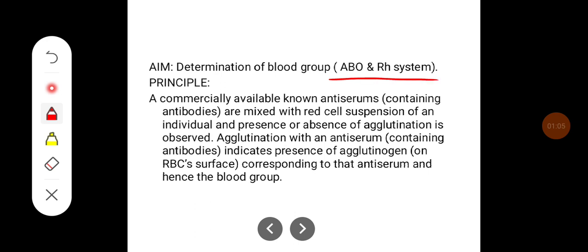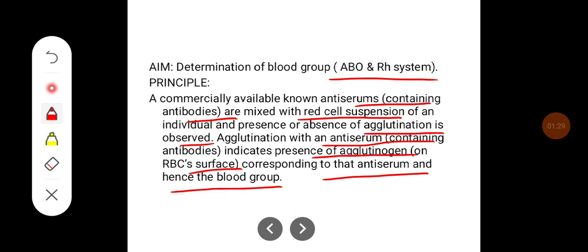The principle here is that commercially available known antiserums containing antibodies are mixed with a red cell suspension of an individual, and presence or absence of agglutination is observed. Agglutination with an antiserum containing antibodies indicates the presence of agglutinogen on the RBC surface corresponding to that antiserum, and hence determines the blood group.